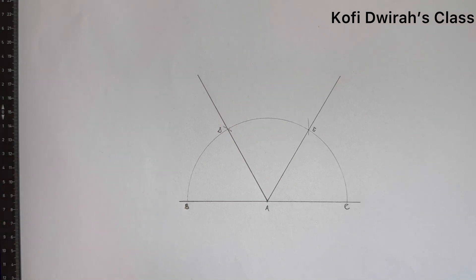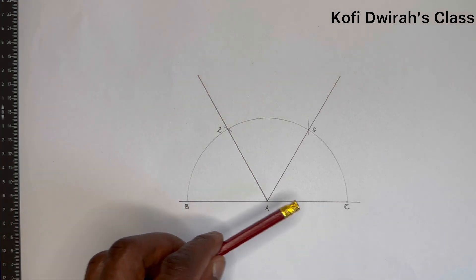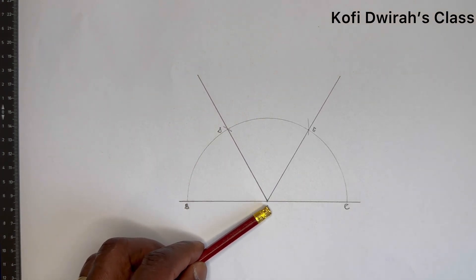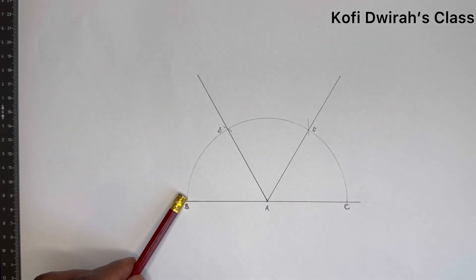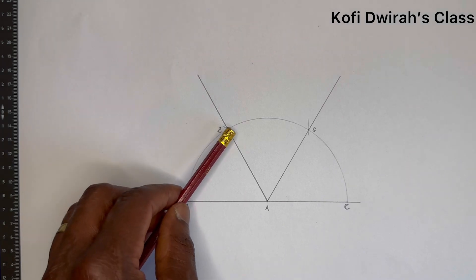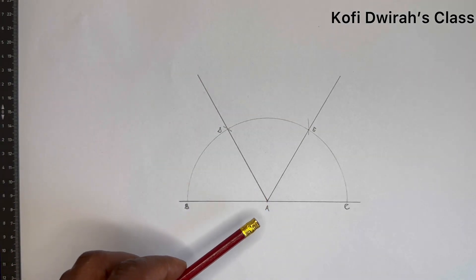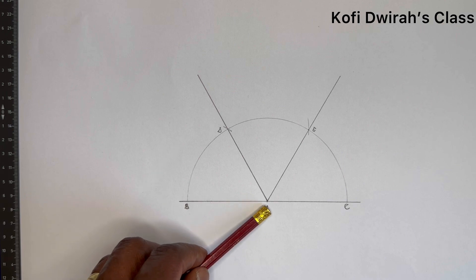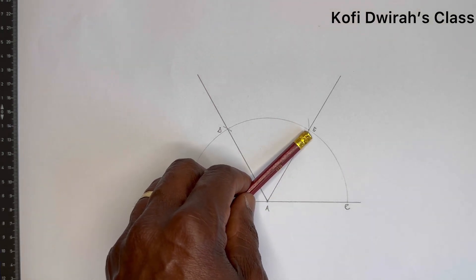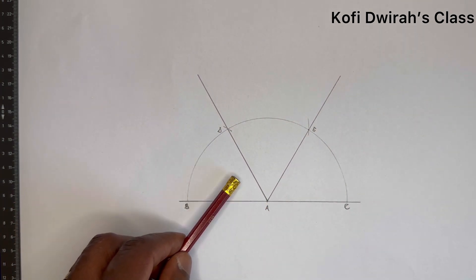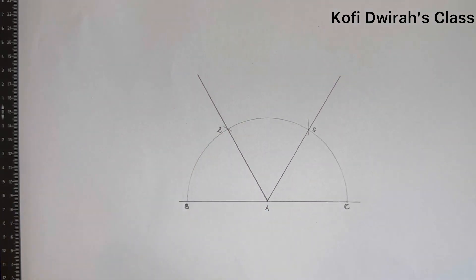This is very simple. Draw your straight line, choose a point — that is point A. Open your compass to any radius and draw an arc. With the same radius at point B, draw an arc. At point D, draw another arc. Then draw a straight line from A through E, and from A through D. The angle here is 60 degrees, and the angle here is 60 degrees. This is how to trisect a 180-degree angle.